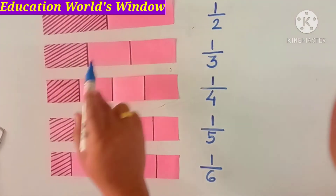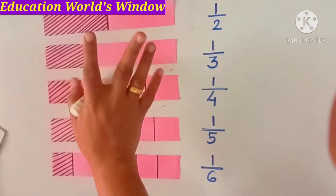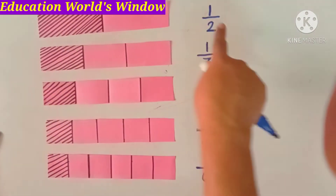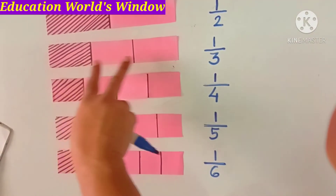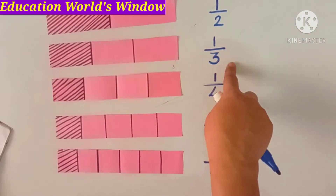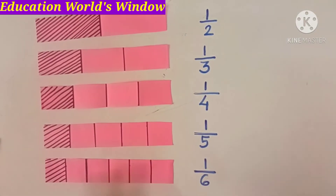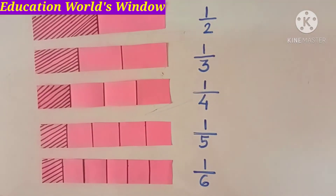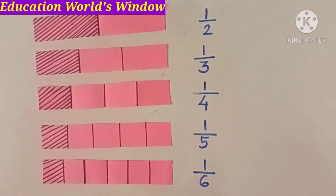The first strip has two parts, so the denominator is 2. The second has three parts, so the denominator is 3. Now we have to compare these fractions.